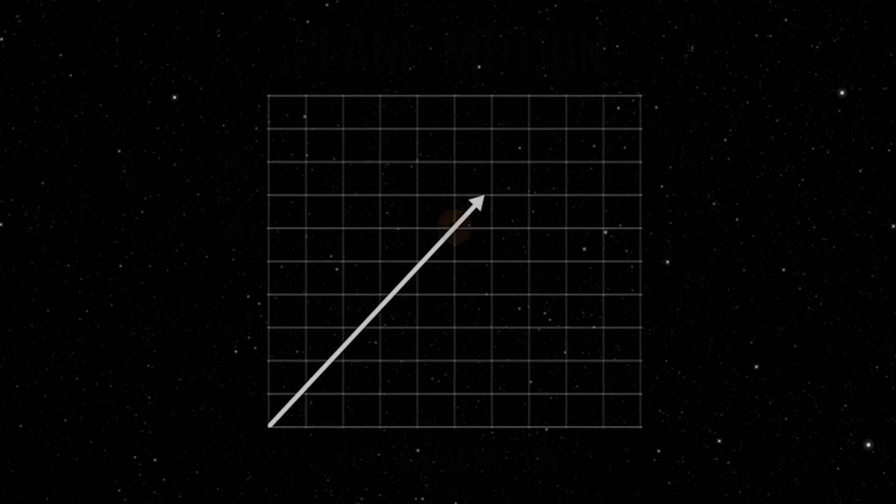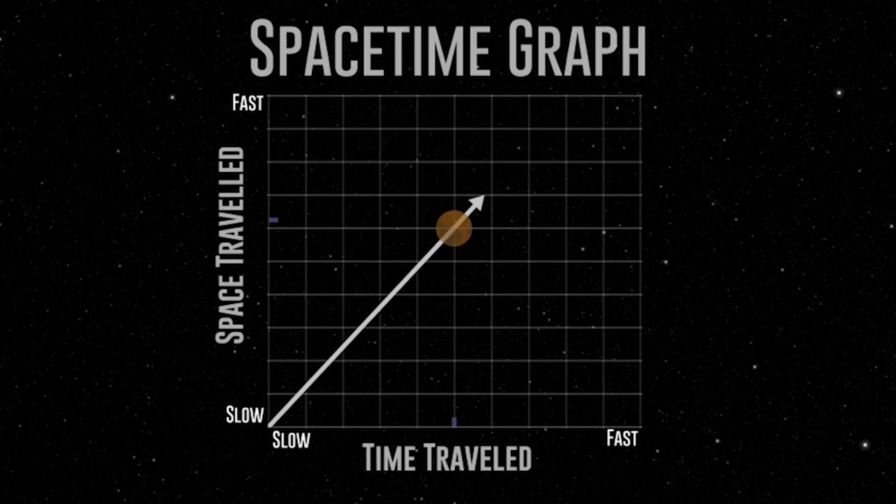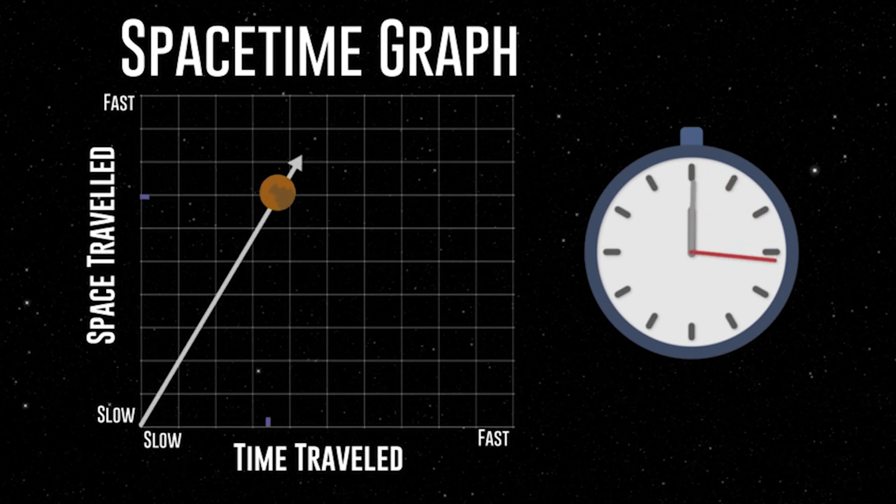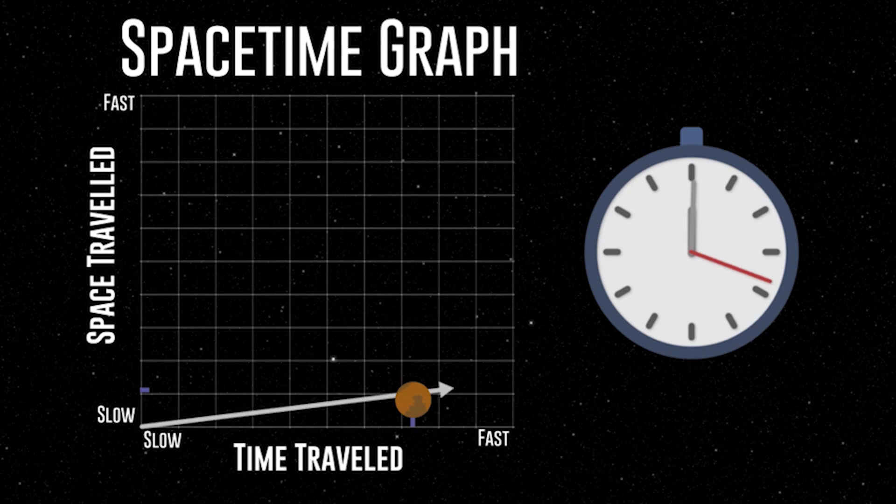The graph can be thought of like a plane moving at a constant speed. As it travels, its speed is diverted more vertically or horizontally. Spacetime works very similarly. Any travel through it is diverted more towards motion or time. In other words, the faster you move through space, the slower you move through time, and vice versa.